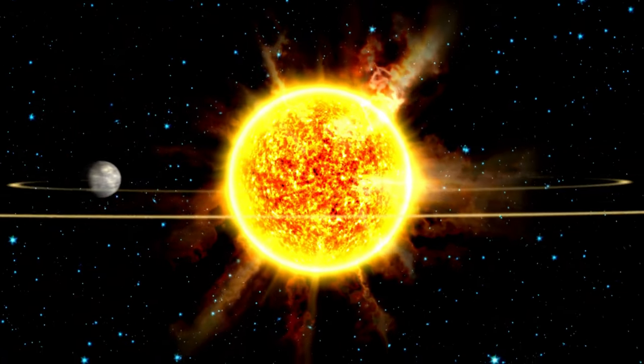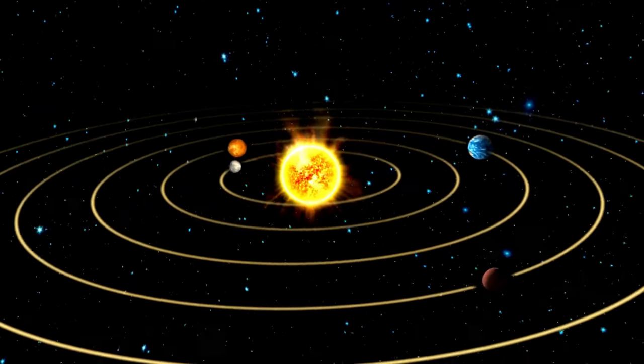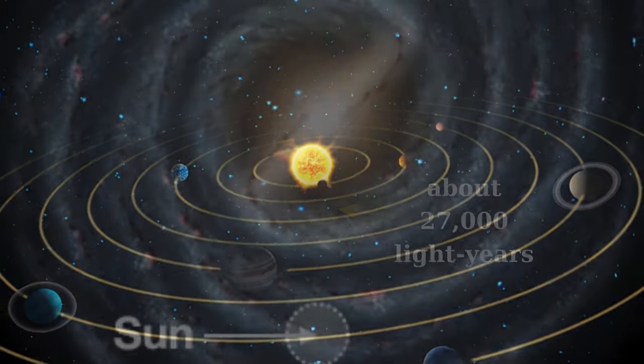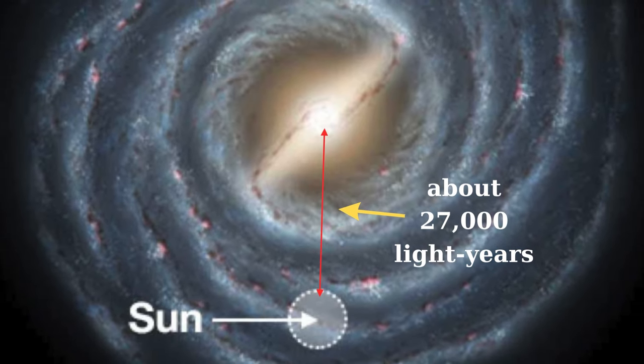Our Sun, along with Earth and all the other planets, is situated in a quiet neighborhood of this galaxy, about 27,000 light years away from the center.